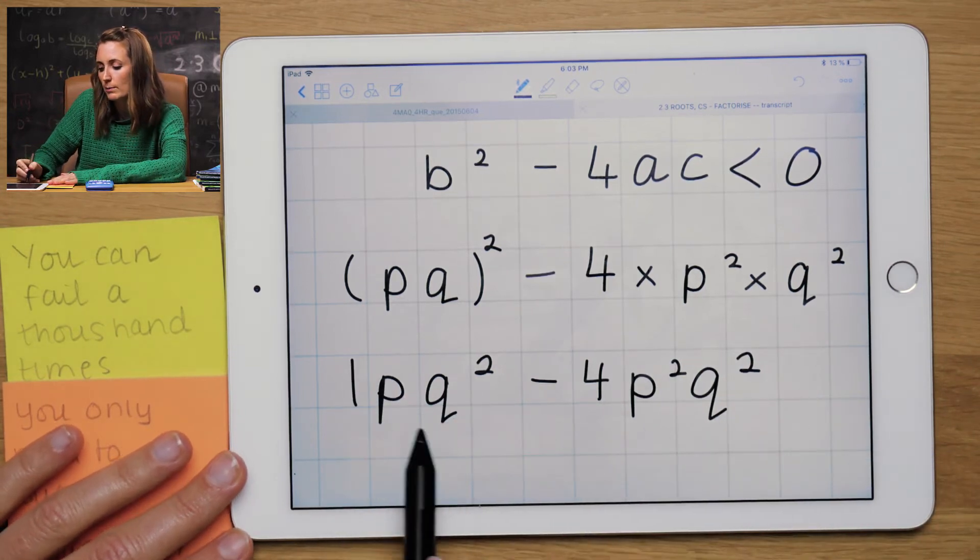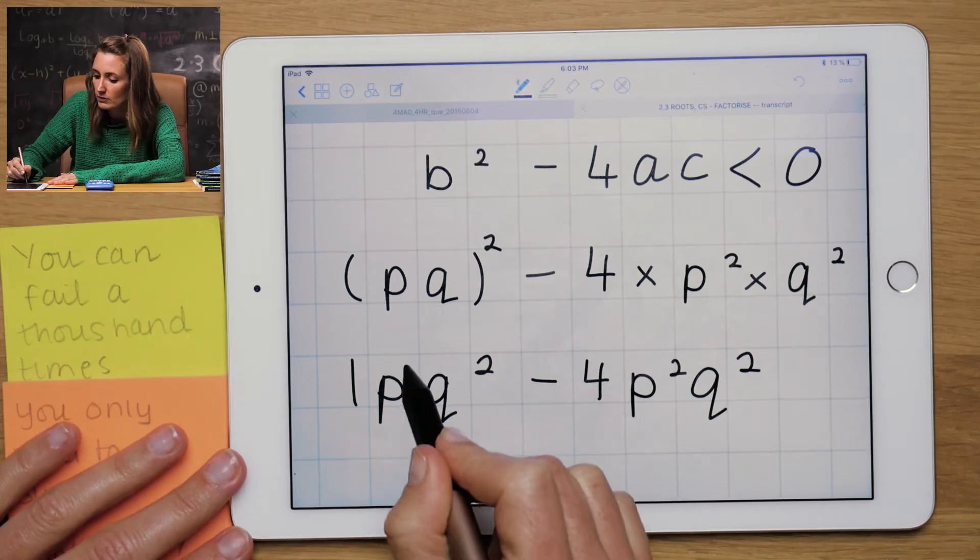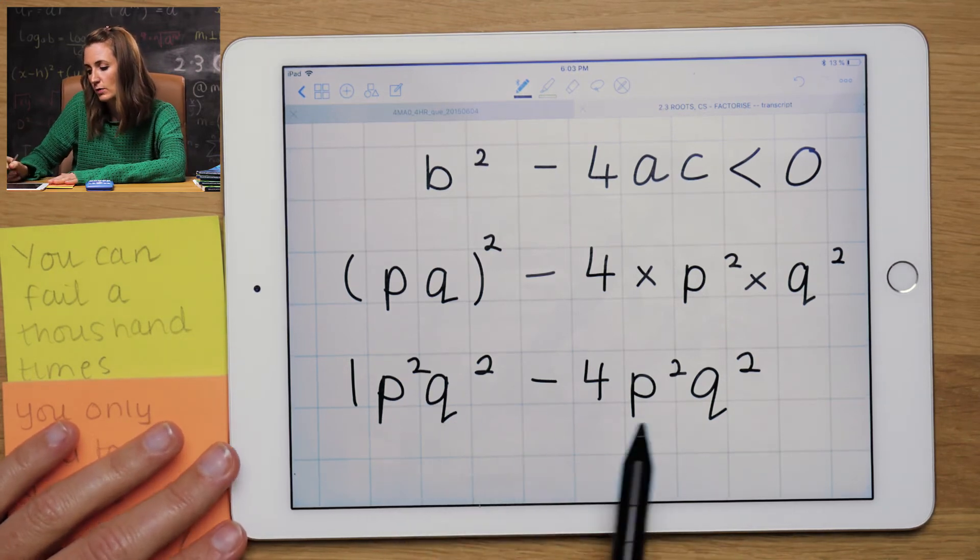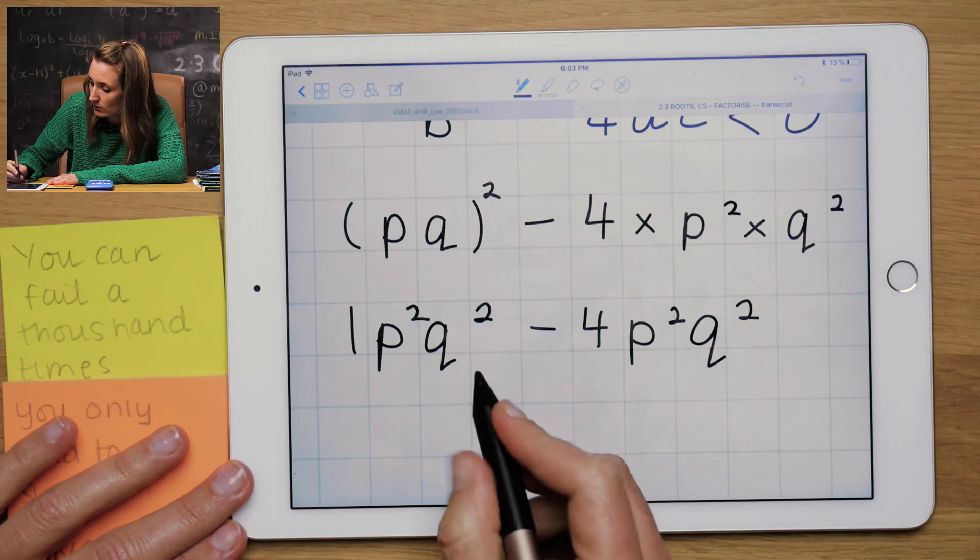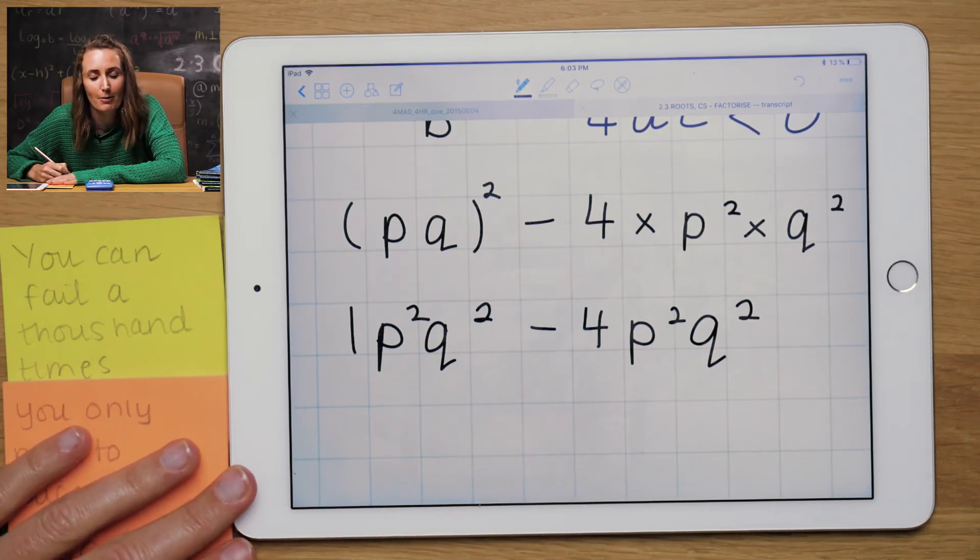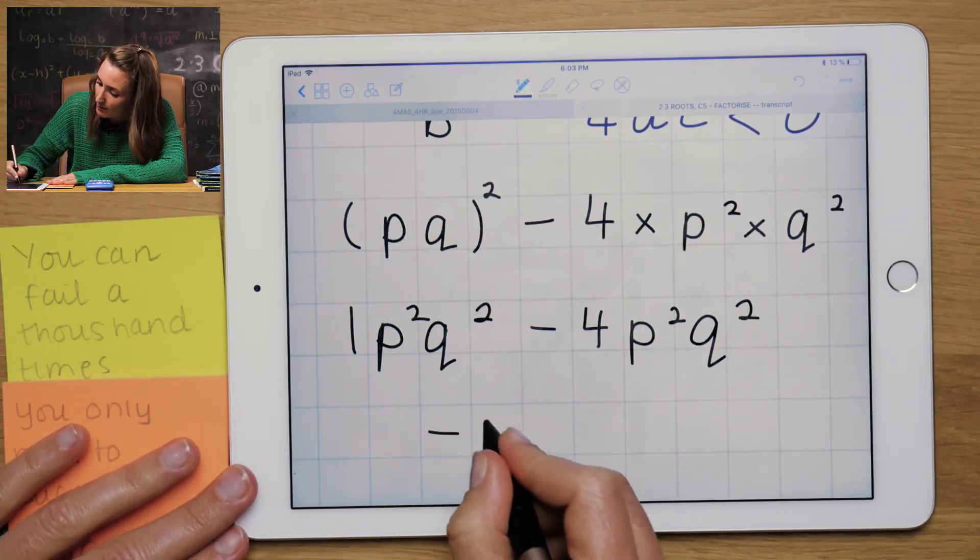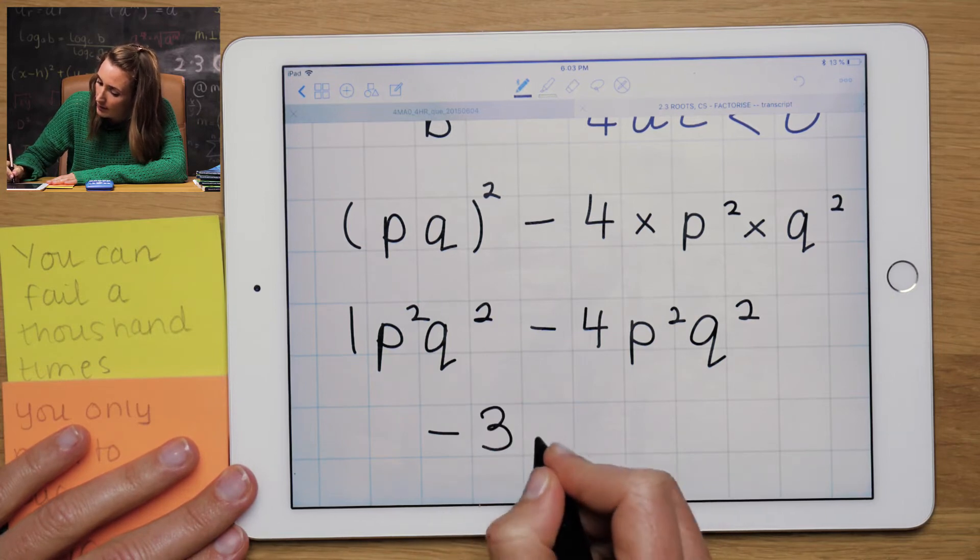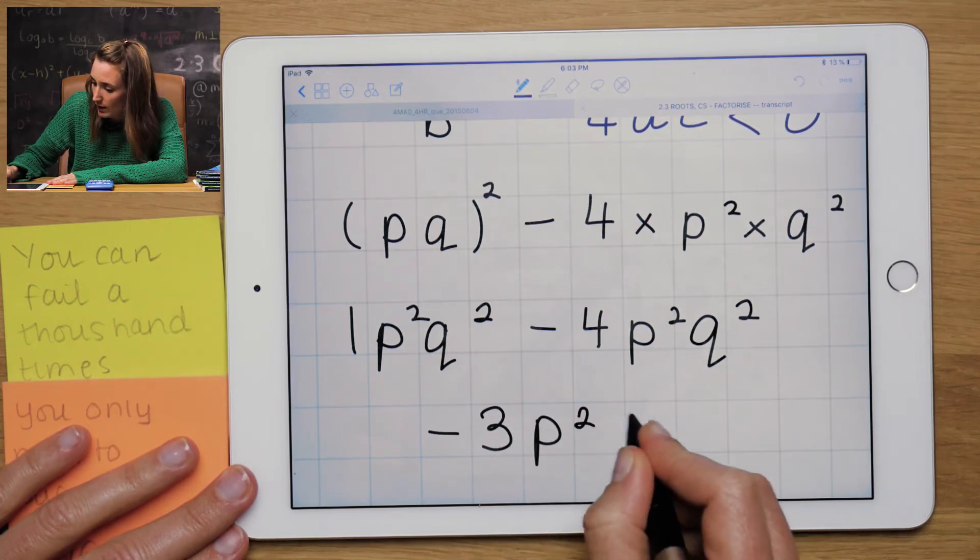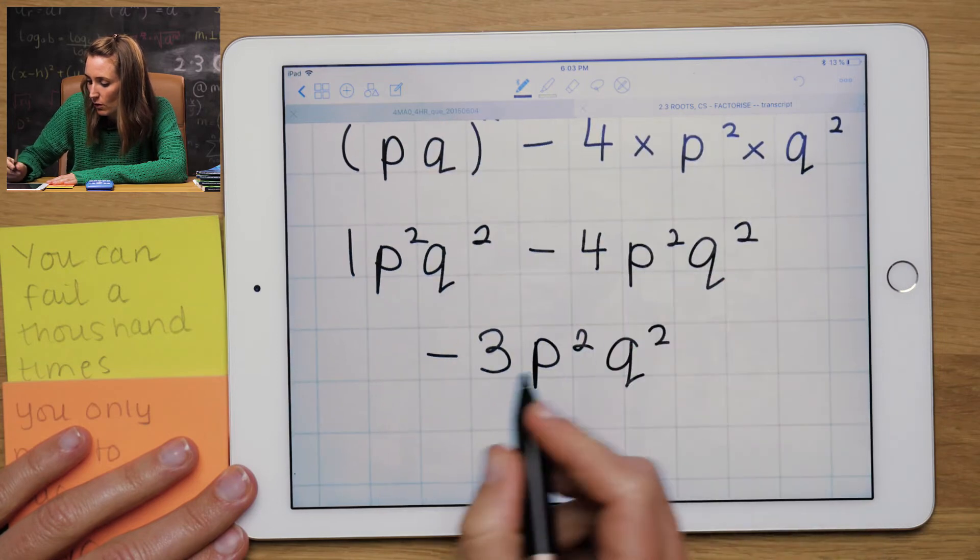Minus 4 p squared q squared. So this is the same as one p squared q squared minus 4 p squared q squared. So that'll be minus 3 p squared q squared.